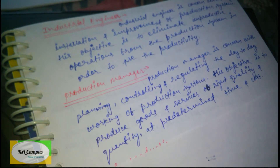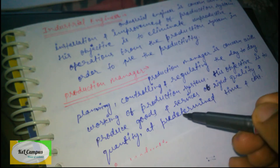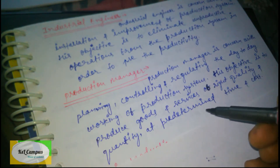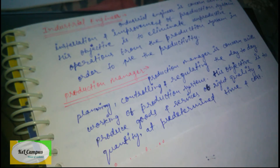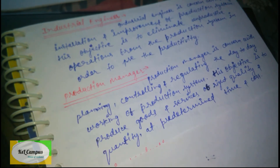Right quality goods and services at predetermined time and cost — this is what the production system determines. The Production Manager ensures this is achieved. This concludes the first chapter. Thank you.